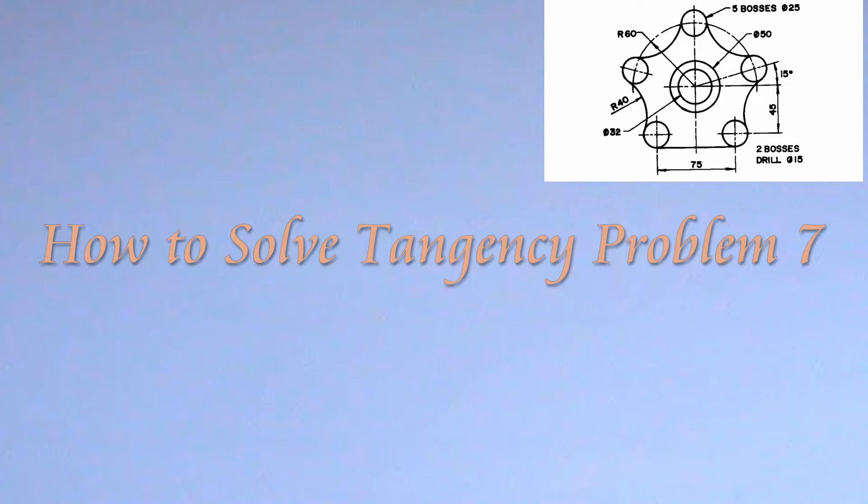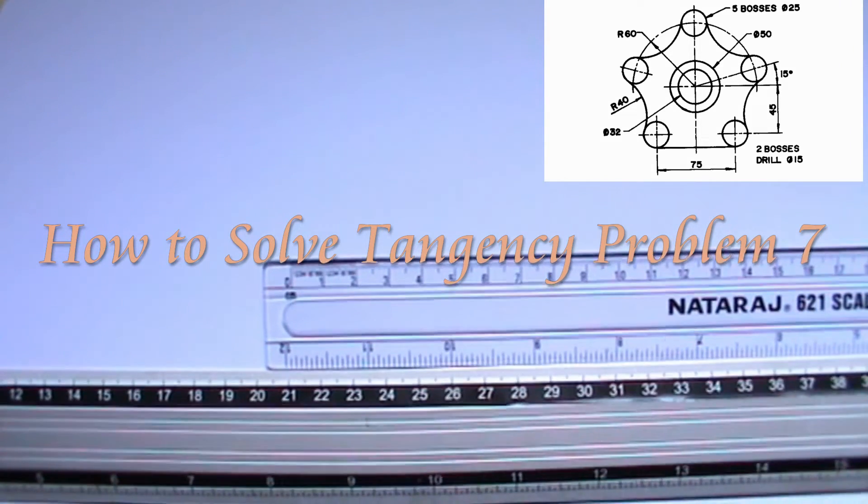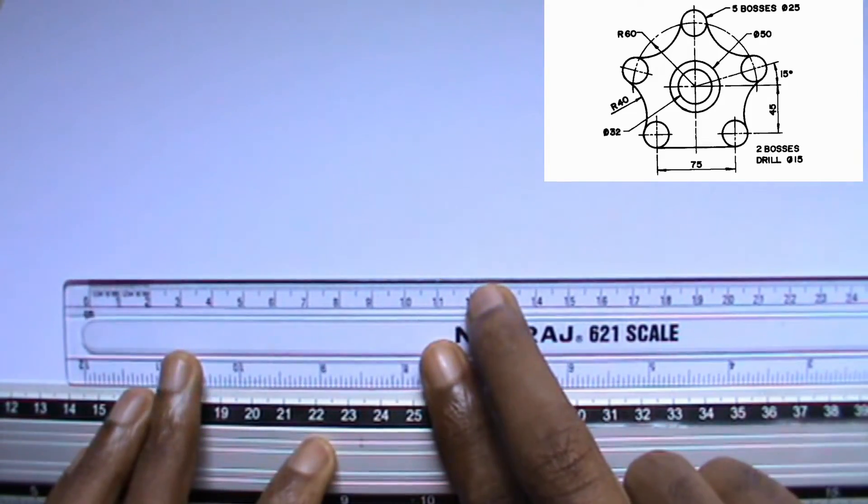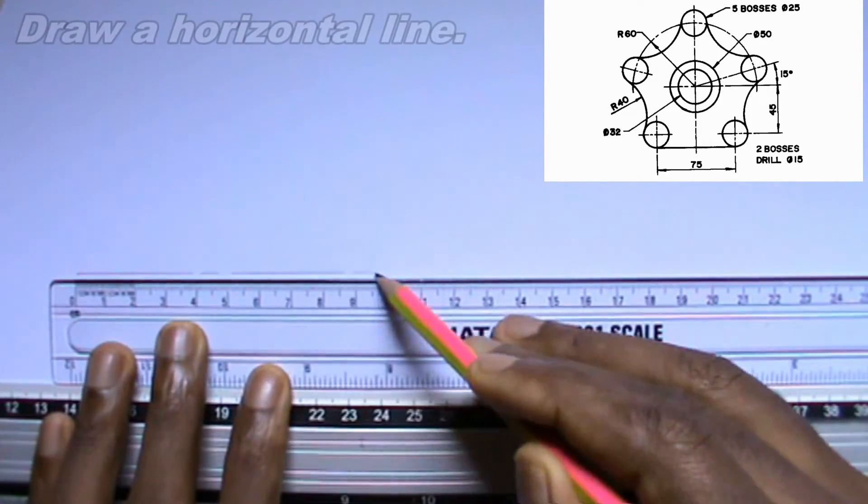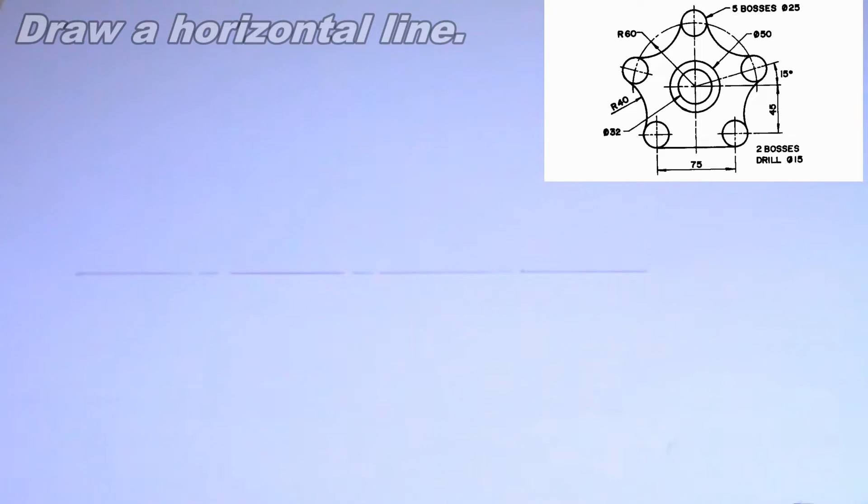Welcome to iTech tutorial. In this video, I will be showing you how to draw the above tang in C problem. To draw this problem, the first thing you are expected to do is to draw a horizontal line. The horizontal line should be a thin chain line. I have already drawn my horizontal line of length 180 mm.